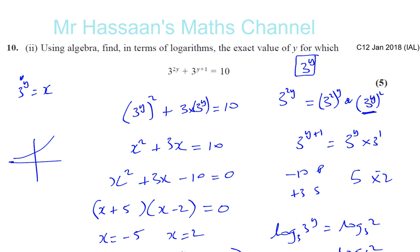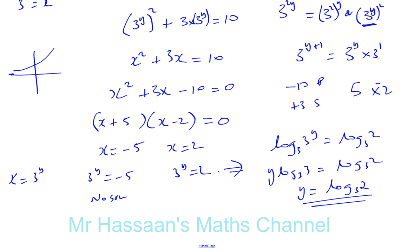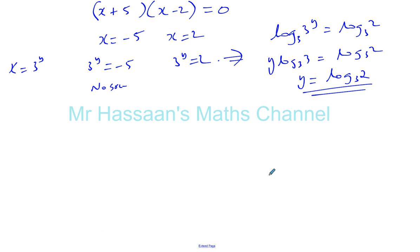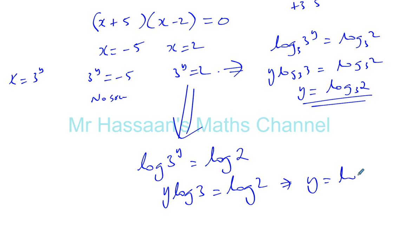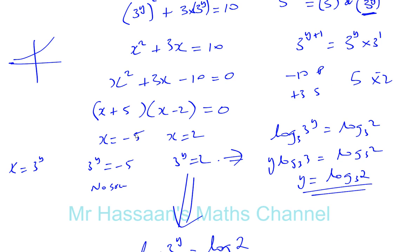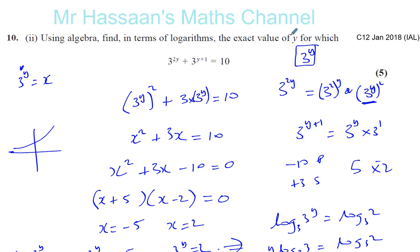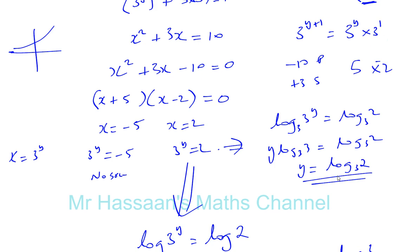That's one way of expressing your answer. The question says, find in terms of logarithms. It doesn't say which log. So you can leave it in log to the base 3 of 2. Or let me show you an alternative way. You could make log to the base 10 if you want. So from this stage, you could carry on. Let's take log to the base 10. So you just have to write log. Log 3 to the power of y equals log 2. Remember, when it's log to the base 10, you don't have to write the 10 there. So you can say y times log to the base 10 of 3 equals log to the base 10 of 2. So you can say y is equal to log to the base 10 of 2 divided by log to the base 10 of 3. You could write your answer like that, and that's fine. It doesn't give you any particular form to write it in.